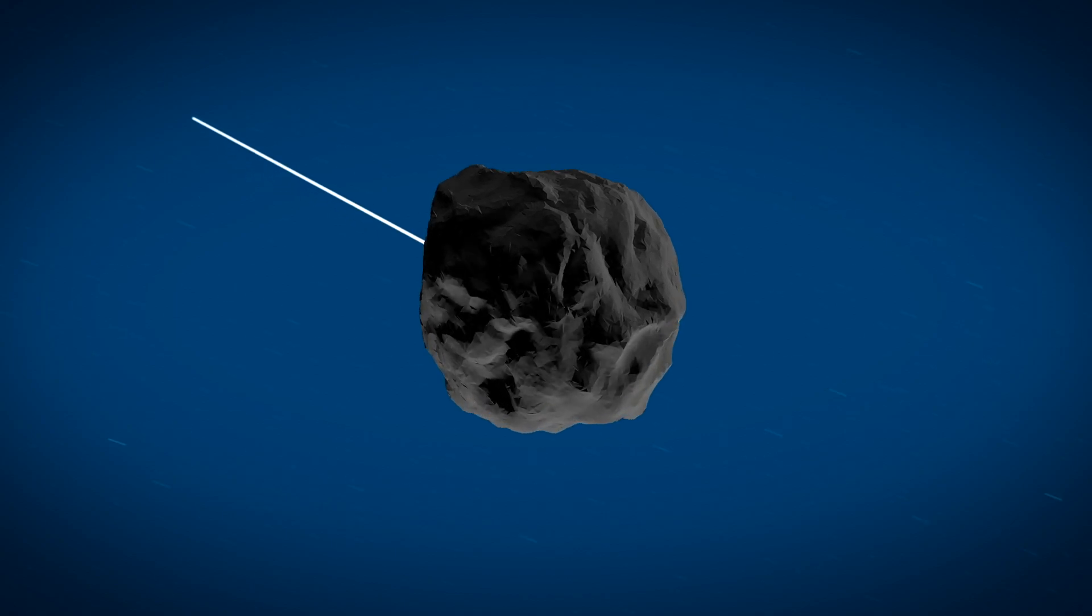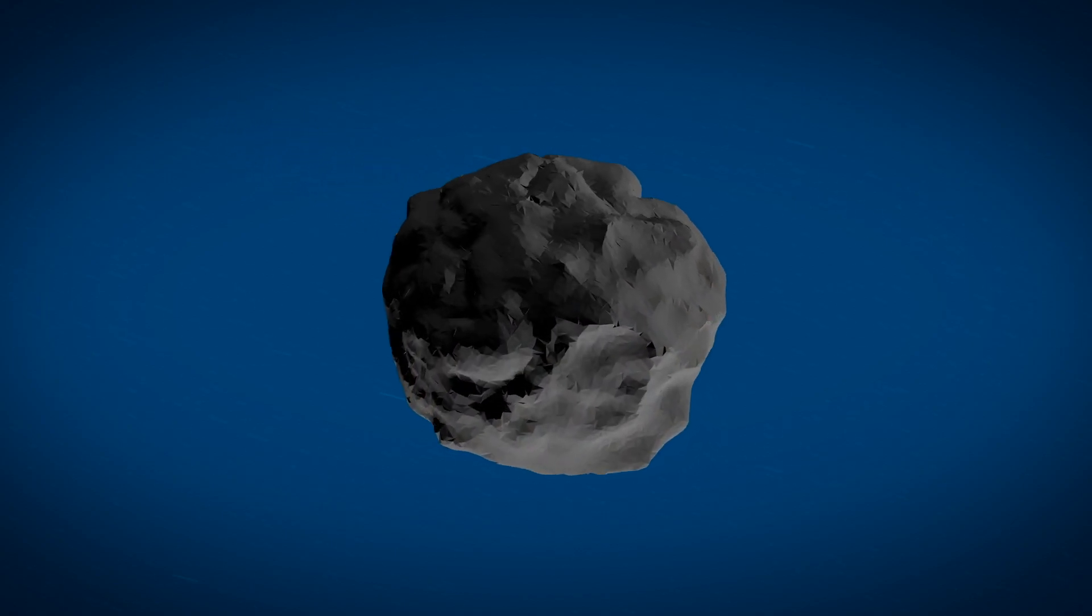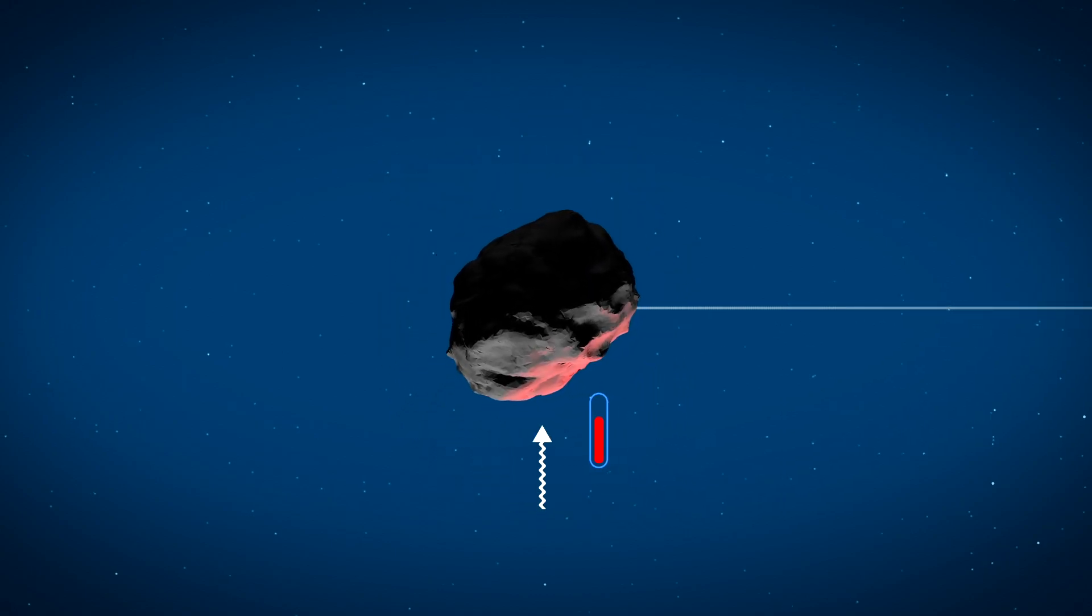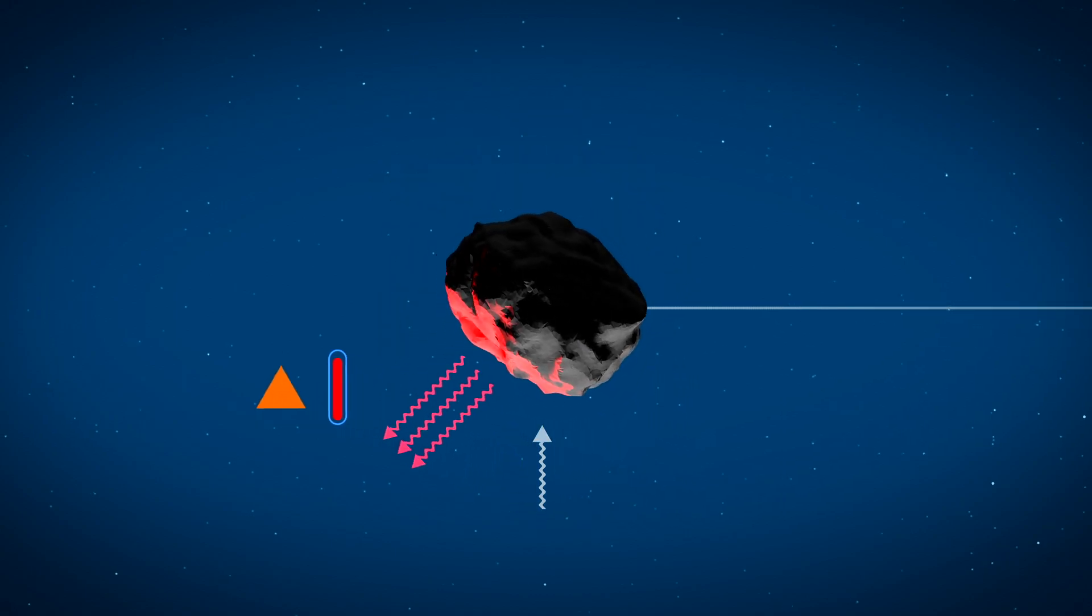Well, like Earth, most asteroids rotate slowly as they move through space. During the day, the surface of the asteroid is illuminated by the sun, so it absorbs heat and grows warmer.